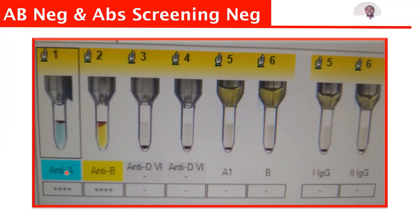This next patient is AB negative because there is a reaction with anti-A and anti-B, meaning this person has antigen A and antigen B. There is no antibody detected in the reverse grouping — it's negative. Antibody screening is also negative, and there is no antigen D. Therefore, this person is AB negative with a negative antibody screen.